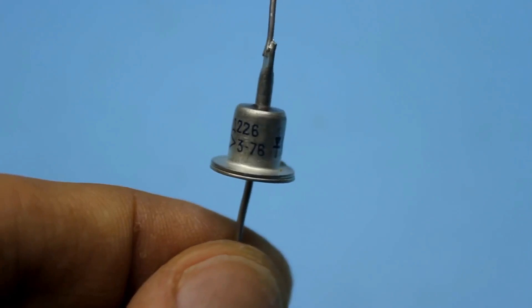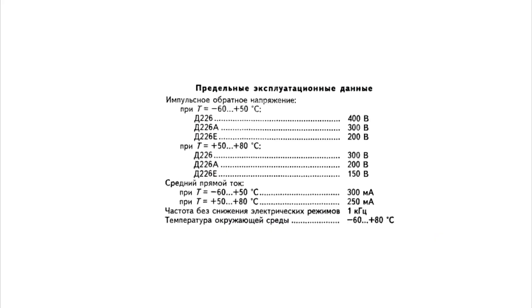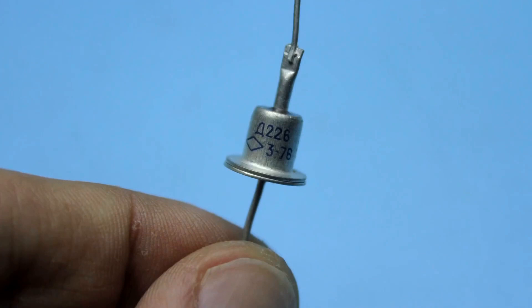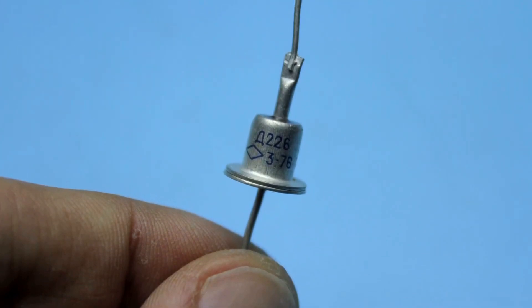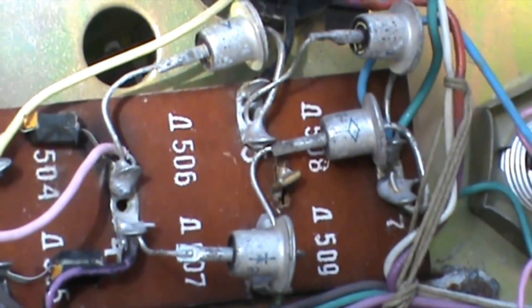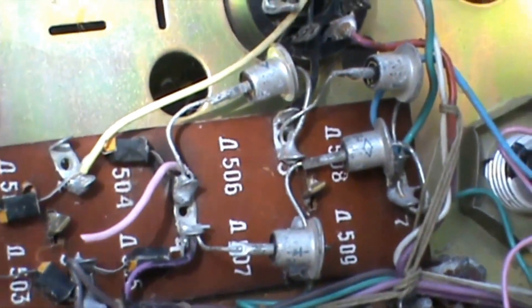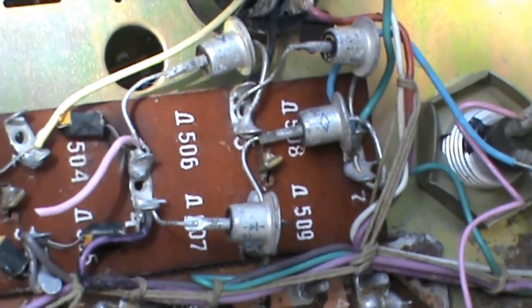They could operate in a wide temperature range from minus 60 to plus 80 degrees Celsius. Due to the fact that their maximum operating frequency was around 1 kilohertz, they were used only for rectifying mains frequency voltage. The diodes were quite good for their time. The only drawback is their sensitivity to installation. They need to be placed at a certain distance from each other, otherwise short circuits are possible since the diode casing is metal.